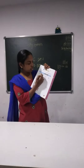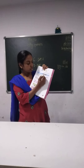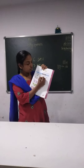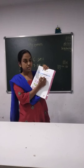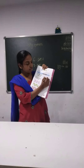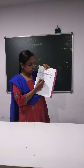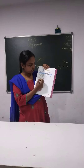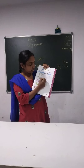Here it is 1, 2, 3, 4, 5. So tally marks: 1, 2, 3, 4, 5. And the number you have to write here — 5. And then here 1, 2, 3, 4, 5, 6, 7, 8, 9, 10. So we will write here 10 tally marks.